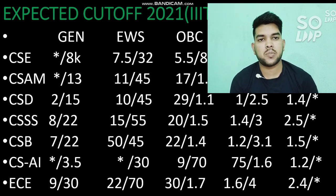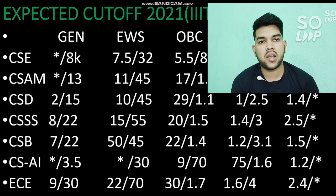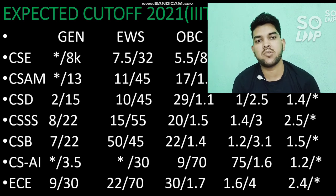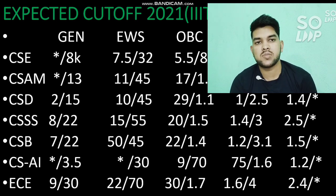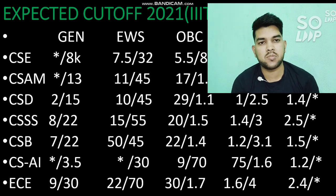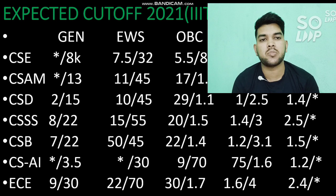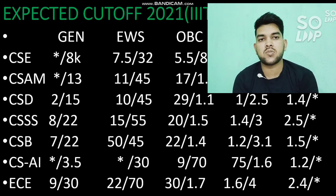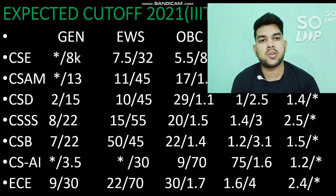This is all about the expected cutoffs for IIIT Delhi, IGDTUW, DTU, and NSUT. I hope you found this video very useful — I have considered all categories with all branches. Please subscribe to this channel and share this video with your friends so they can also save one academic year. I have seen many students last year who got seats and were able to save their academic year, and the value of one academic year is immense.